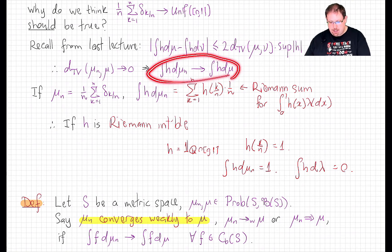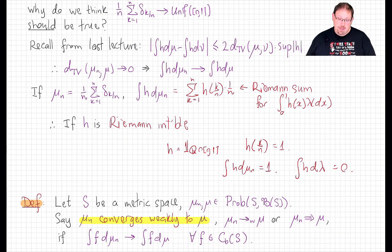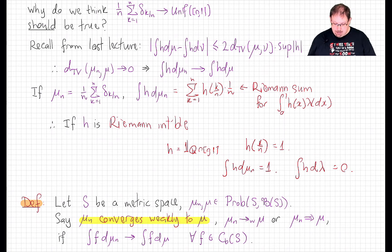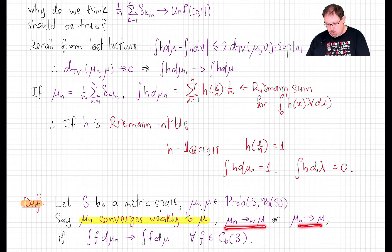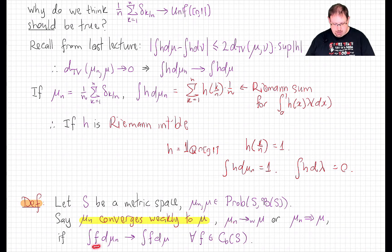So maybe we should take convergence of integrals as our definition, but restrict the allowed test functions to be Riemann integrable. That is close to what we will do, but we'll actually be even a little more restrictive. Consider any metric space S, and take any sequence of Borel probability measures on S and a putative limit Borel probability measure on S. We say that mu_n converges weakly to mu, or converges in distribution to mu, if the integral of any continuous bounded test function against mu_n converges to the integral of that same function against mu.